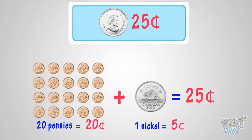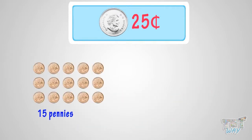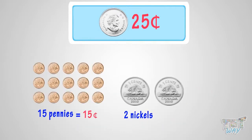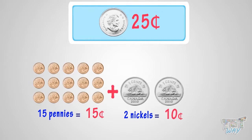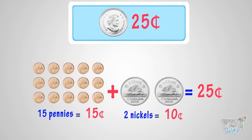So we can exchange this set of coins too for a quarter. Another way can be 15 pennies and 2 nickels. 15 pennies will make 15 cents, and 2 nickels will make 10 cents, so in total we will have 25 cents. 15 cents plus 10 cents equals 25 cents. So we can exchange this set of coins too for a quarter.